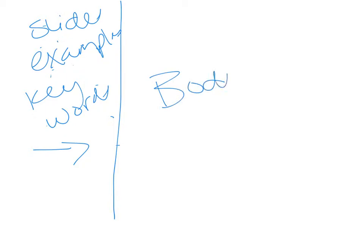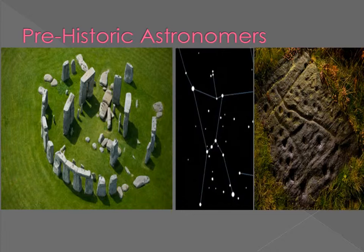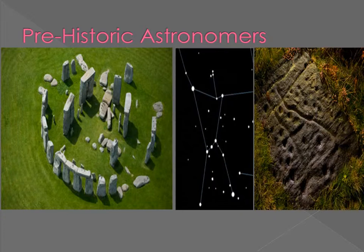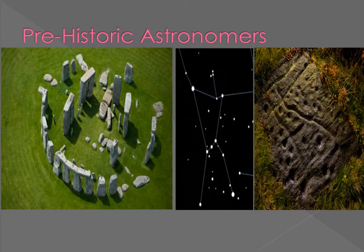Ancient cultures have always looked to the sky to explain their origins, describe creation stories, and describe their greatest heroes. There is a strong correlation between astronomy and policy and religion because the most ancient priests were also the astronomers. We can see this in structures like Stonehenge, which has astronomical origins, and even the pyramids of Giza, which are believed to align with the belt stars of Orion.